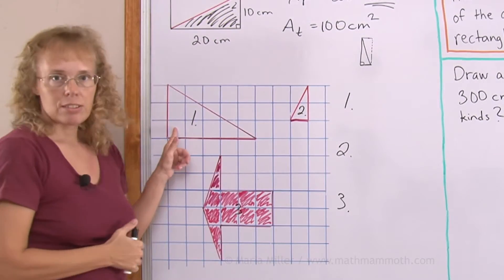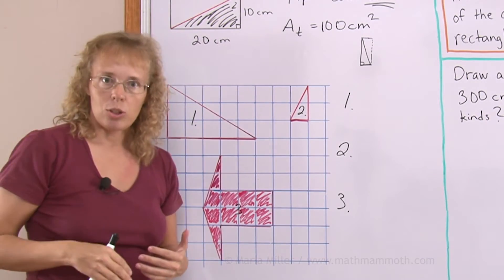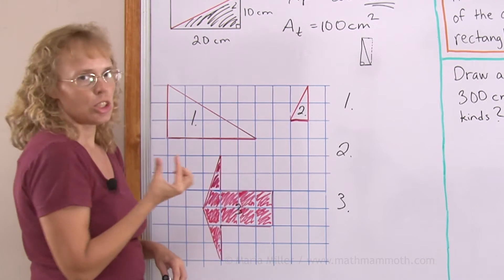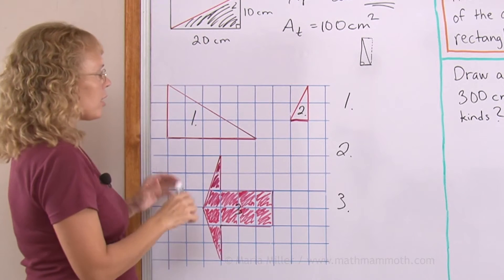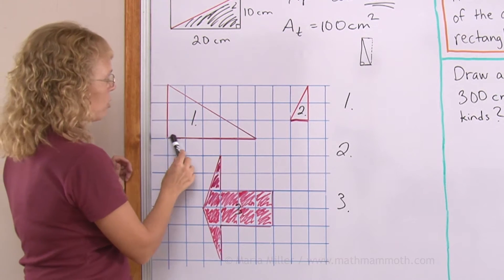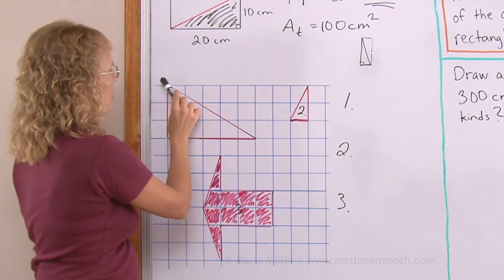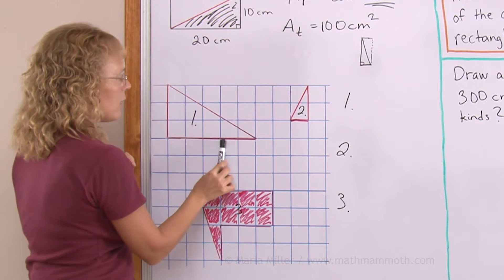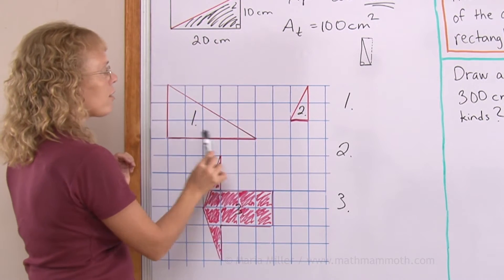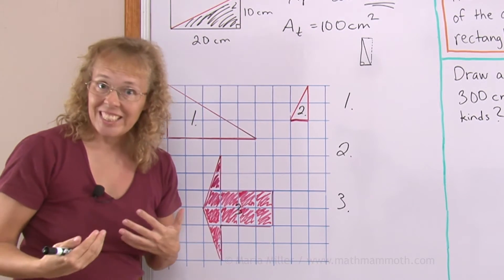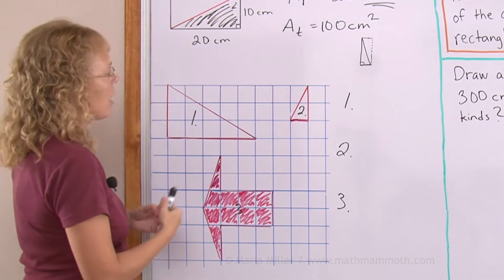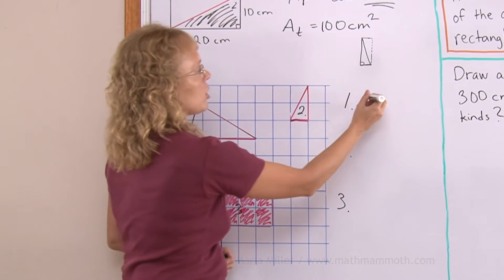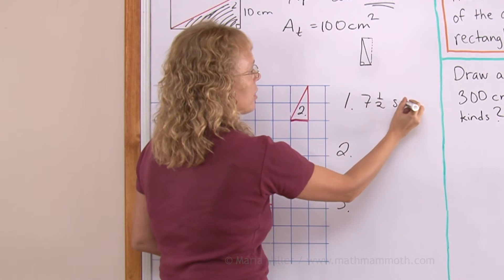Let's find the area of this right triangle here in square units — not any particular unit like centimeter or inch, just a unit. Think of the rectangle that goes here, here, here, and here. Its sides are three and five units, so the area of the rectangle is 15 square units. Half of that is seven and a half, so the area is seven and a half square units.